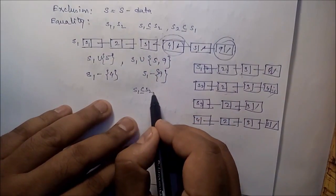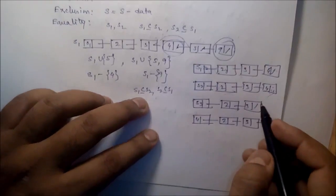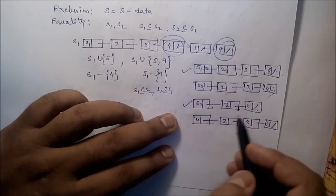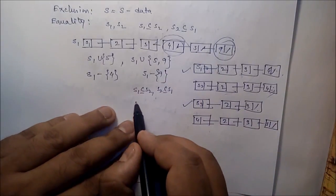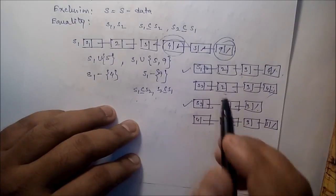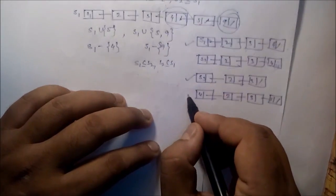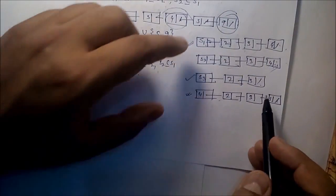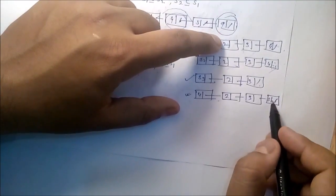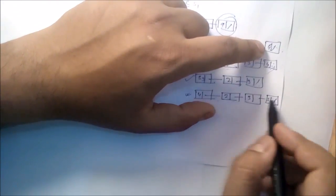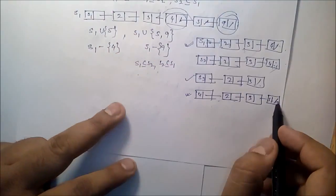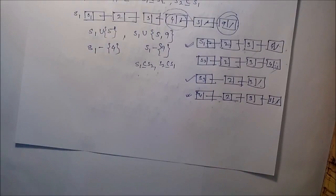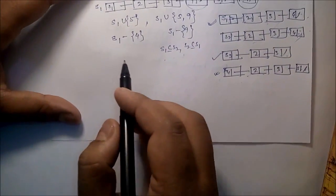Now if you compare s1 and s3, the number of nodes in s1 is three but in s3 is two, so no need to check one by one — we can say s1 and s3 are not equal. For s1 and s4, the number of nodes is the same. Checking element by element: two is there, three is there, but four is not there, so s1 and s4 do not satisfy the equality property.